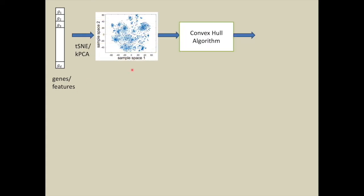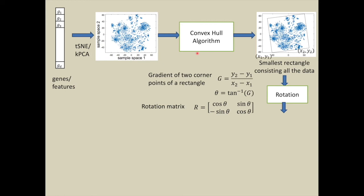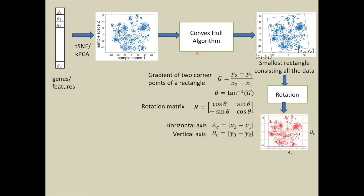We have a d-dimensional feature vector which is processed by t-SNE to get a representation in 2D space. Then, convex hull algorithm is used to find the smallest rectangle consisting all the data to discard white noise. Next, rotation is performed to align axes horizontally and vertically.